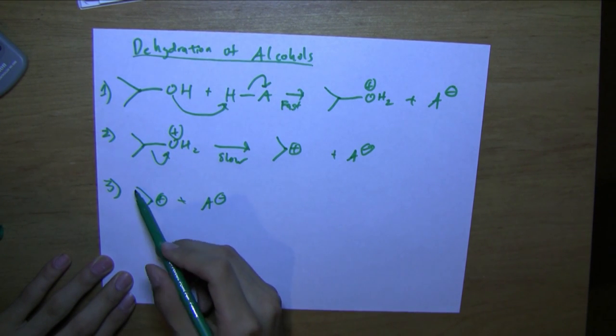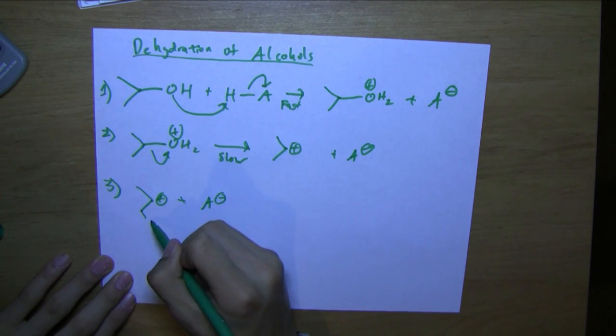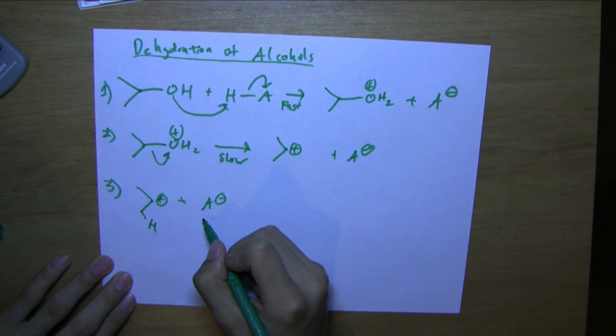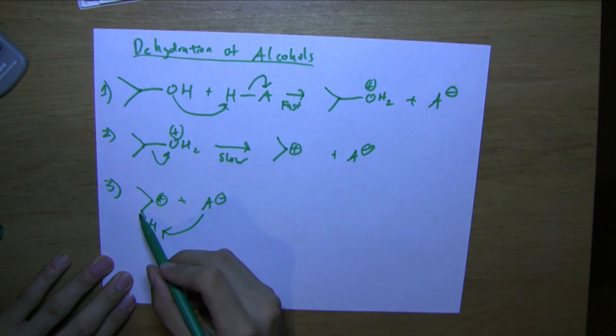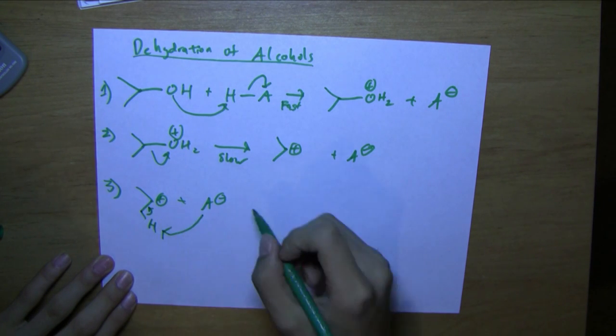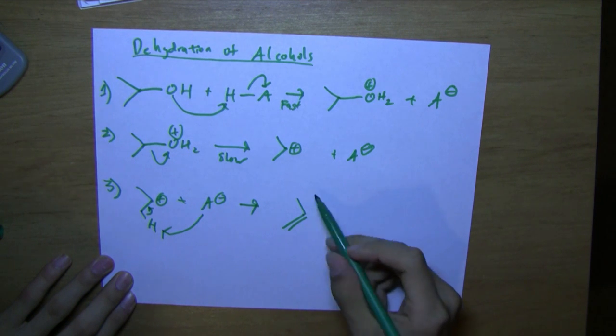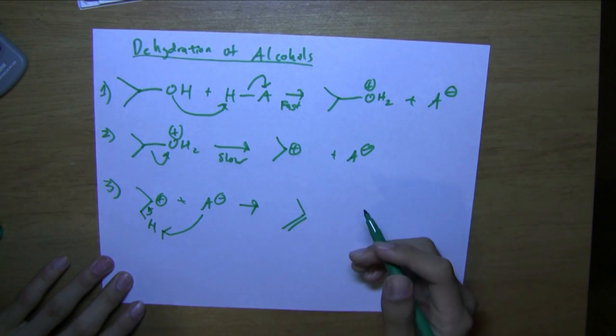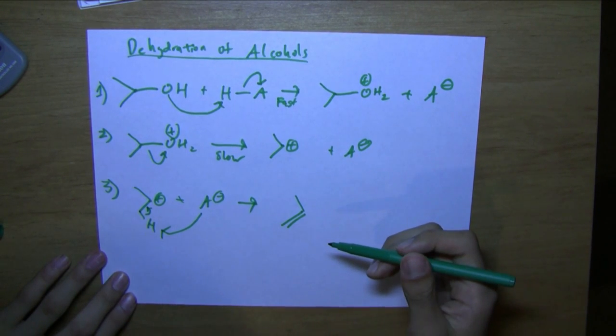It could go from either of these, but since they're the same, it doesn't really matter. So let's just do this one. Electrons from the conjugate base come here, and the carbon-hydrogen bond donates to the carbon-carbon bond, and this releases the positive formal charge. And so we get this propene compound. This is pretty basic for secondary and tertiary.